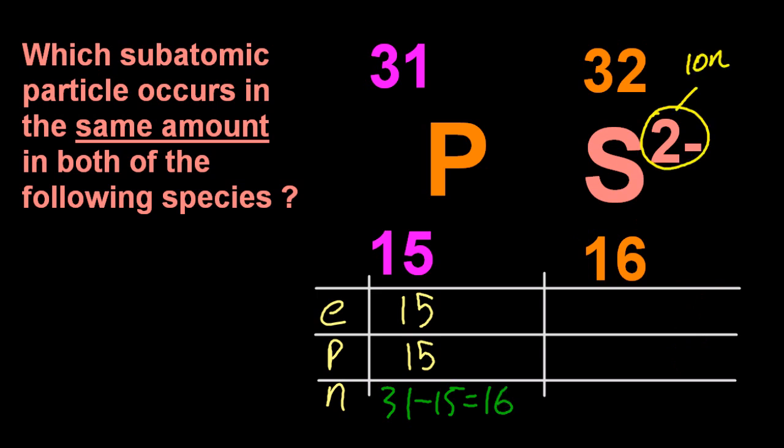That 2 minus means that two electrons, two negative electrons, or all electrons are negative, have been added. So you have to include that in the number of electrons.